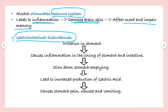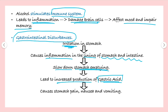In gastrointestinal disturbances, irritation is felt in the stomach, and it causes inflammation in the lining of the stomach and intestine. It also slows down stomach emptying and leads to increased production of gastric acid. Gastric acid helps in lowering our pH, kills ingested bacteria, and limits bacterial growth in the stomach. If its production increases, it will cause stomach pain, nausea, and vomiting.